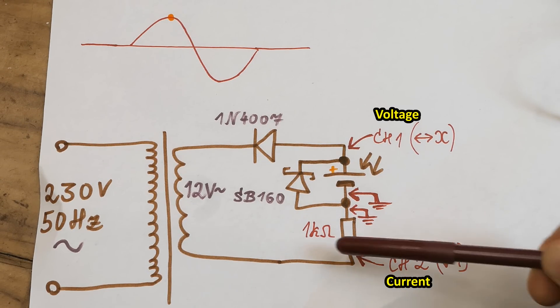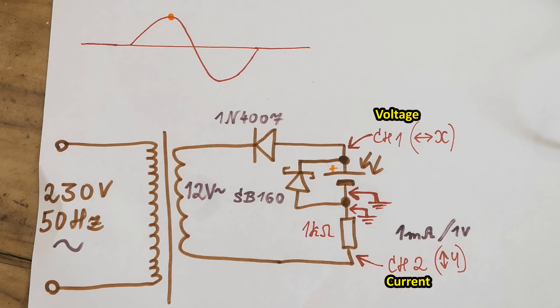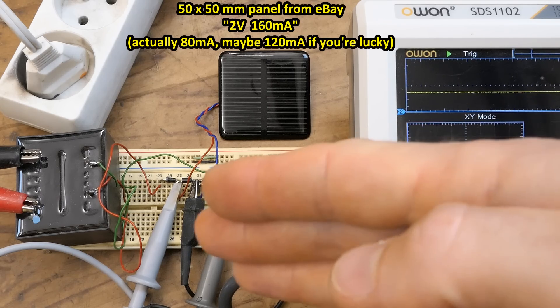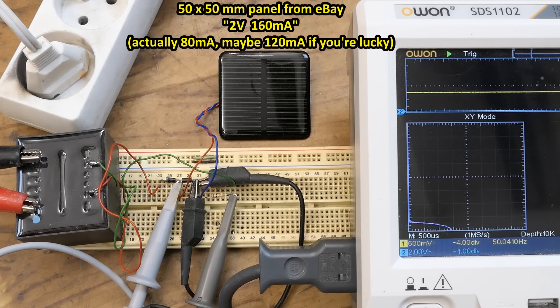And for the current to be easy to calculate, I'm using 1kΩ resistor, so the reading is 1mA per 1V. And this circuitry is enough to show the IV curve on an oscilloscope.